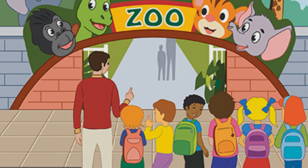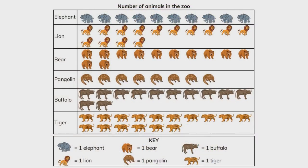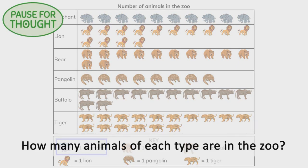Elephants, lions, bears, pangolins, buffalo and tigers. Here is a pictogram that shows how many of these animals live at the zoo. The key tells you that one picture represents one animal. How many animals of each type are in the zoo?